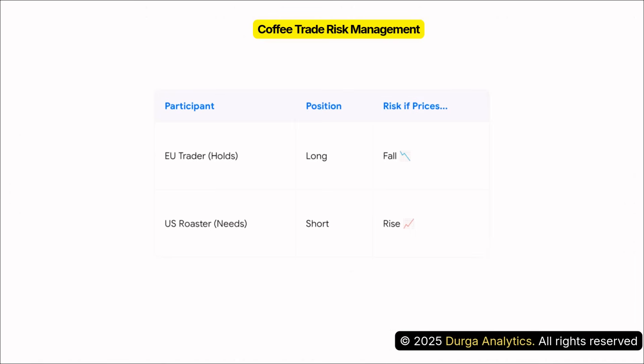Let's make this crystal clear with a real-world case study. We've got an unhedged EU trader holding physical Robusta inventory — they are long. If the London Robusta futures market suddenly falls, their inventory value is immediately reduced, and that could even trigger margin calls from their bank.